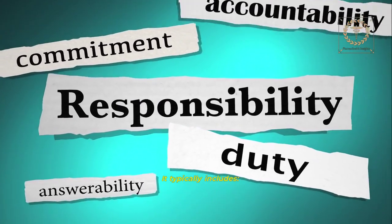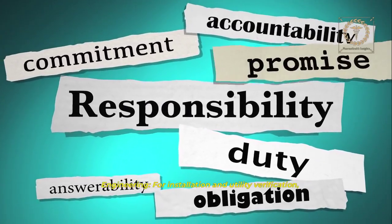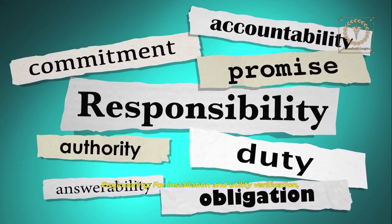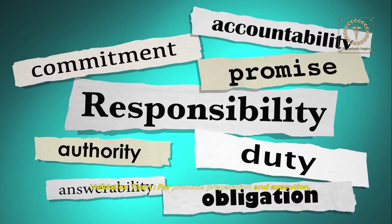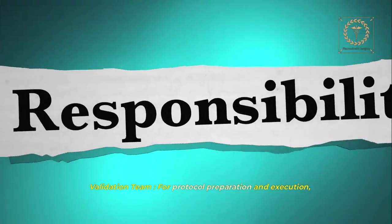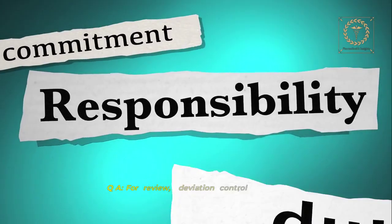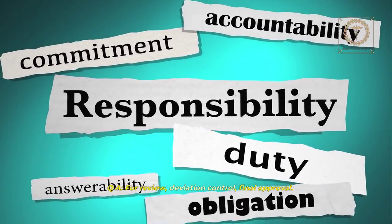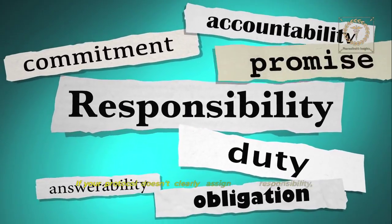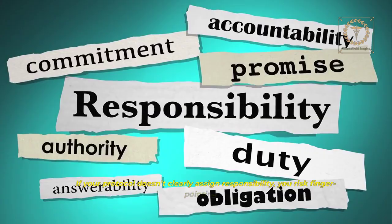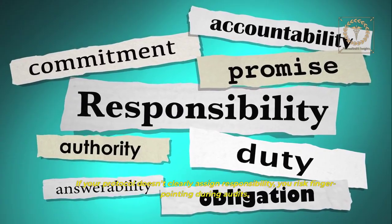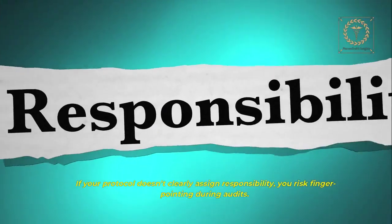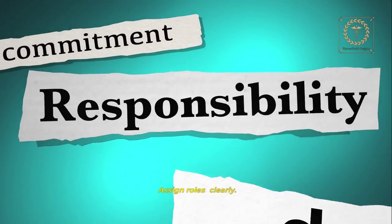Define the responsibilities — who does what? It typically includes engineering for installation and utility verification, the validation team for protocol preparation and execution, and QA for review, deviation control, and final approval. If your protocol doesn't clearly assign responsibility, you risk finger-pointing during audits. Assign roles clearly.